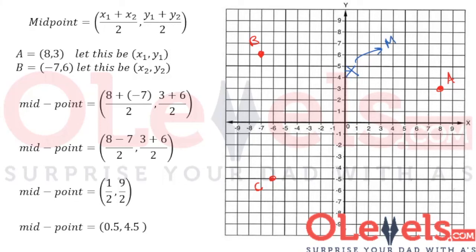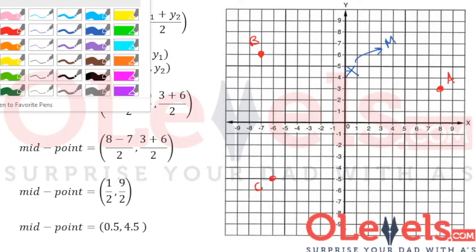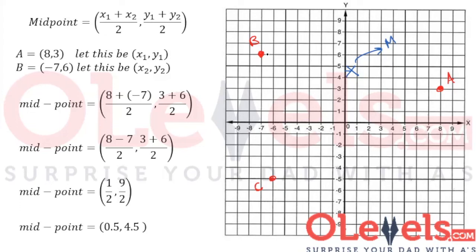We can observe that if we draw an arrow going from A to B, then M lies exactly in the middle of A and B. So by now, you should have a pretty solid understanding of what a midpoint is and how do we find it.